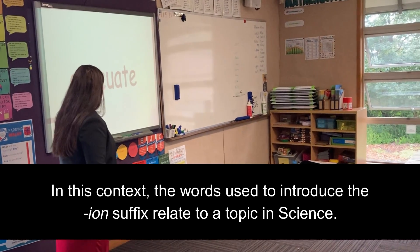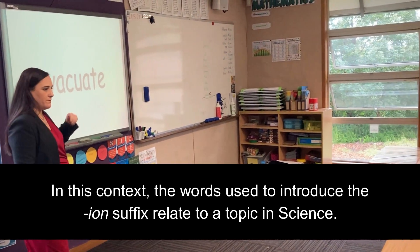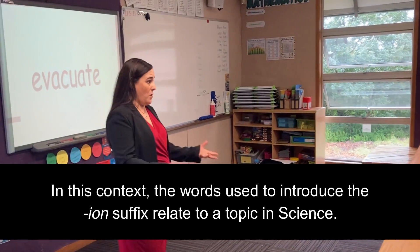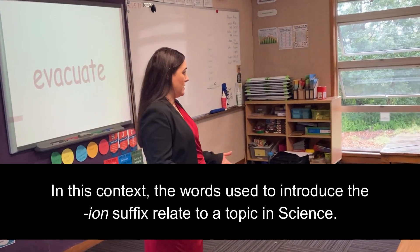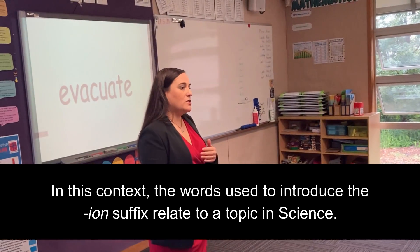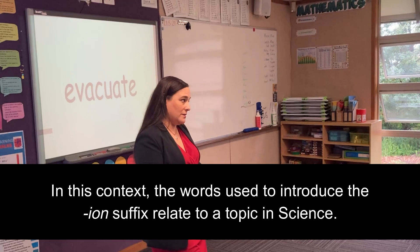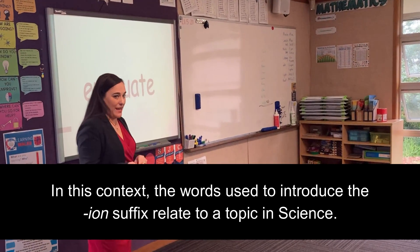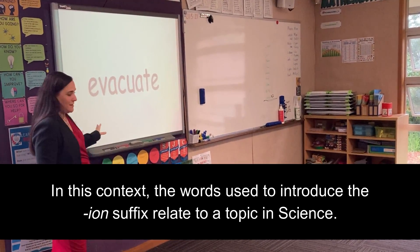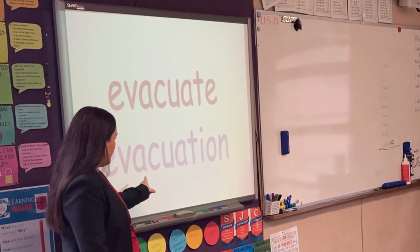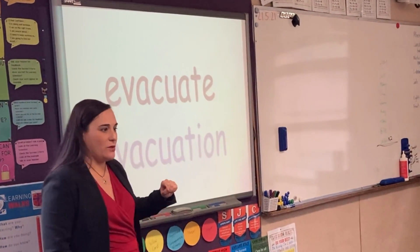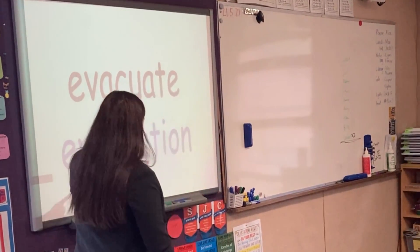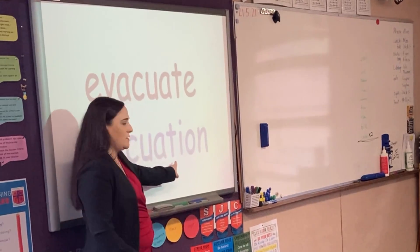Now this word is 'evacuate.' It's a verb — it's a happening word, an action. If I turn that word into a noun, I end up with a suffix I-O-N, and it looks like this. You can see this word here: 'evacuation.' So now I've got I-O-N, and just before the I-O-N, what letter do you see?